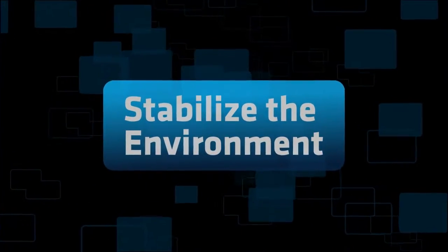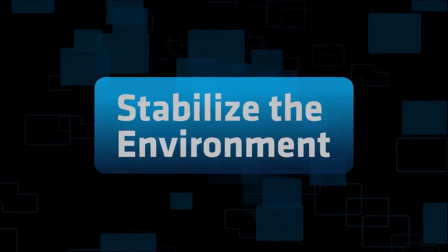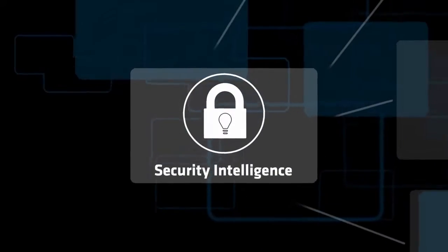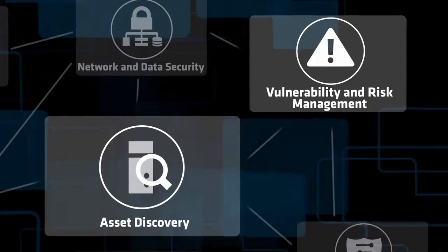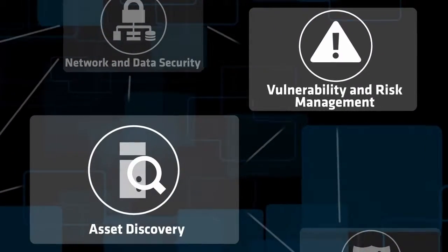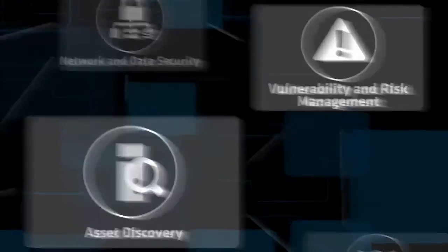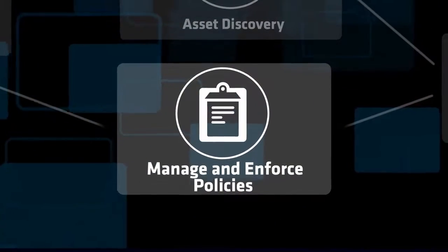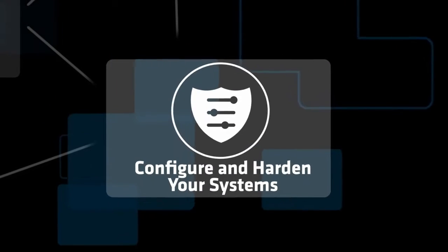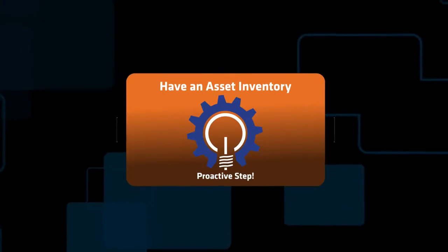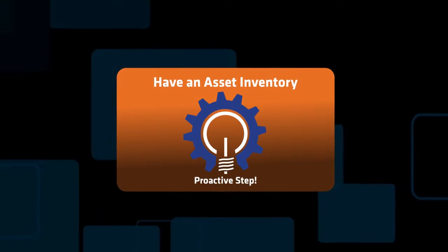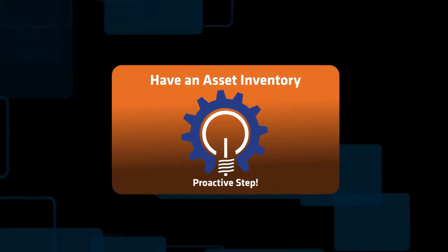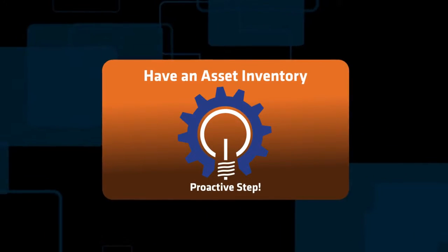Step 1: Stabilize the environment. Your IT security teams will need to remove or reduce access to production systems, change all credentials, freeze changes, and control access to physical and virtual backups in order to stabilize the environment. Does your organization already have a current and prioritized inventory of your most important assets — your crown jewels?